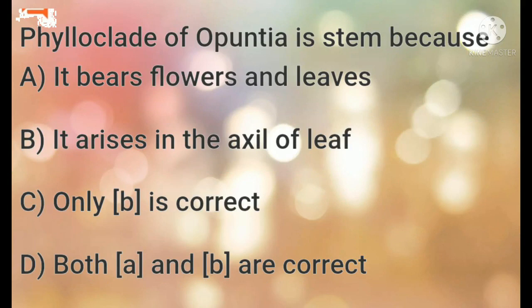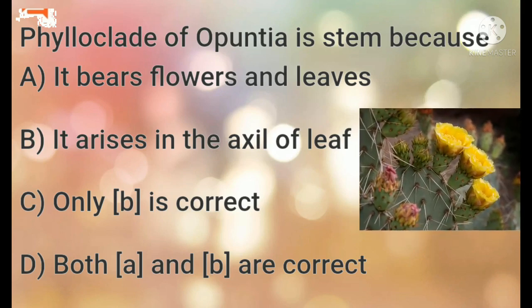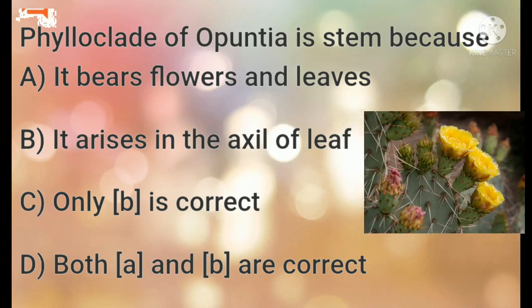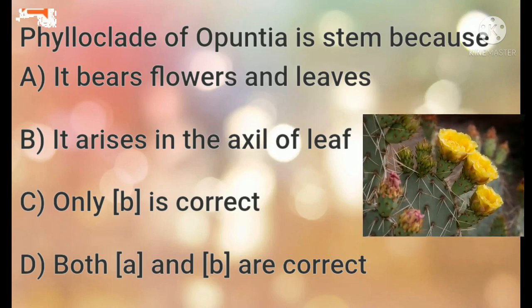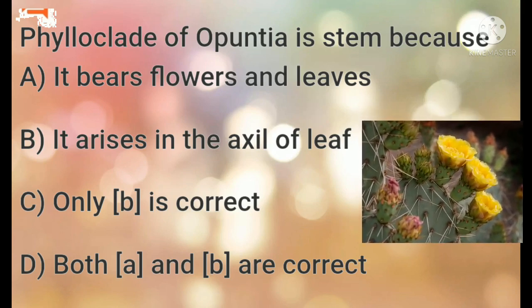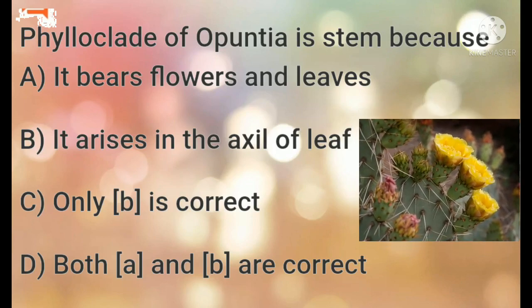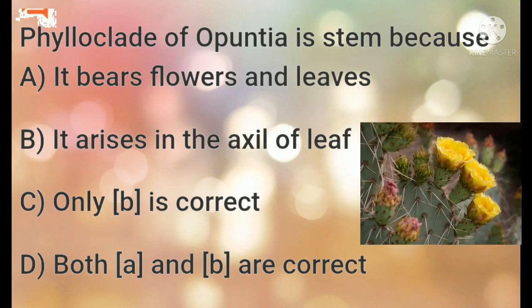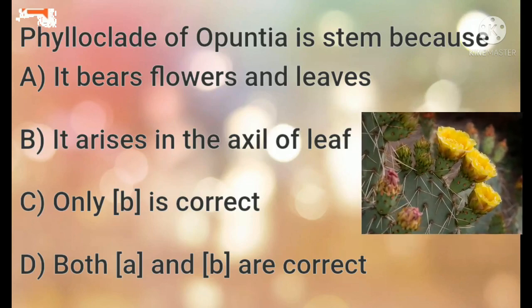The next question is: phyloclade of Opuntia is a stem because of which reason? Phyloclade is the modification of stem that performs photosynthesis. It is not a leaf because it bears flowers and leaves. First option: it bears flowers and leaves. Second option: it arises in the axil of a leaf.